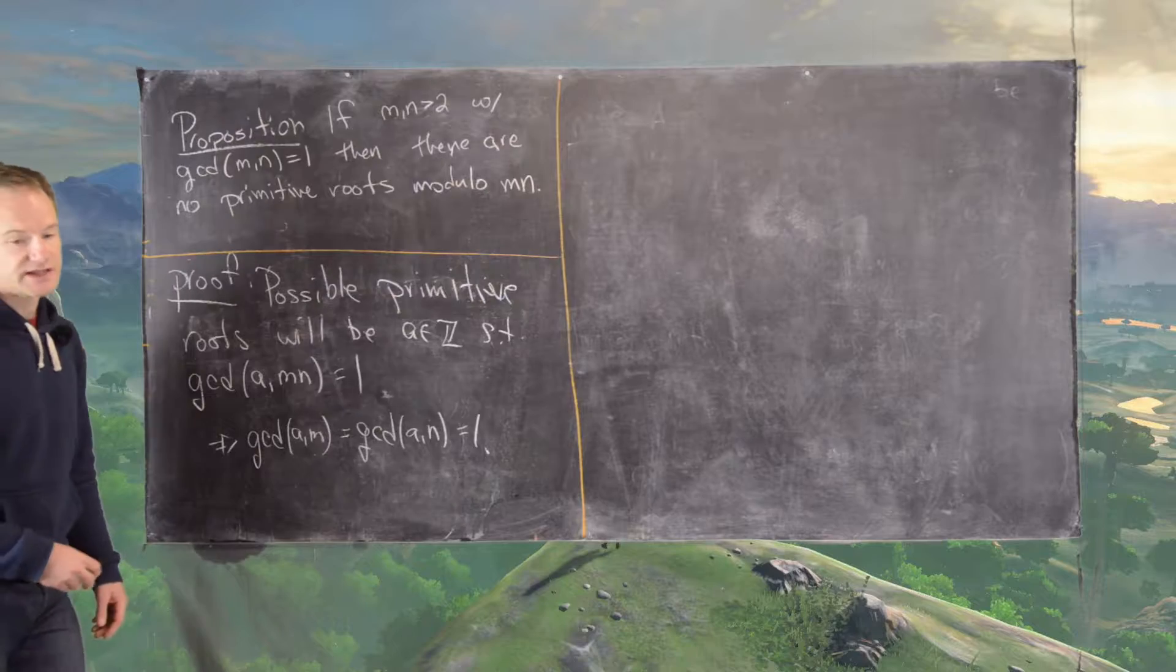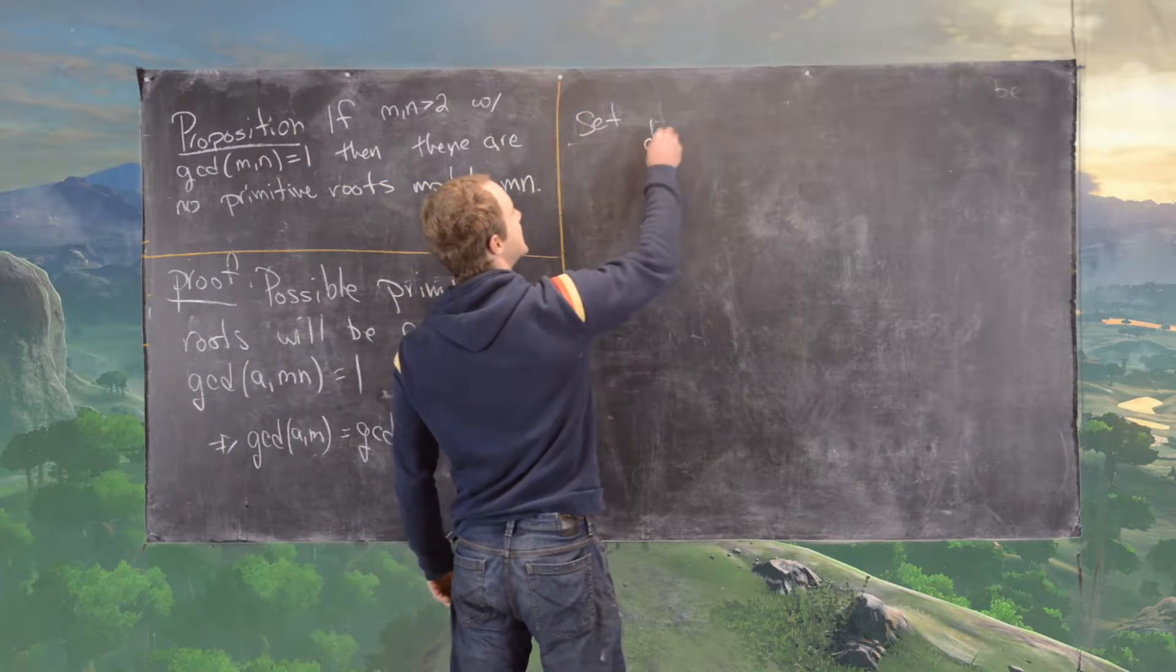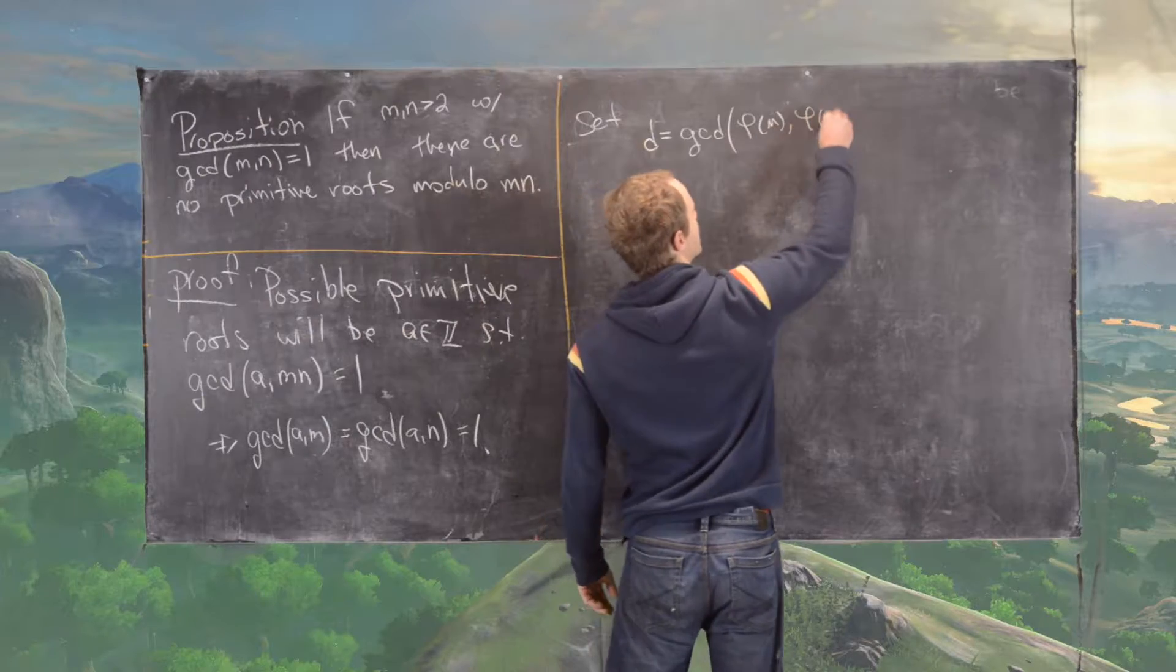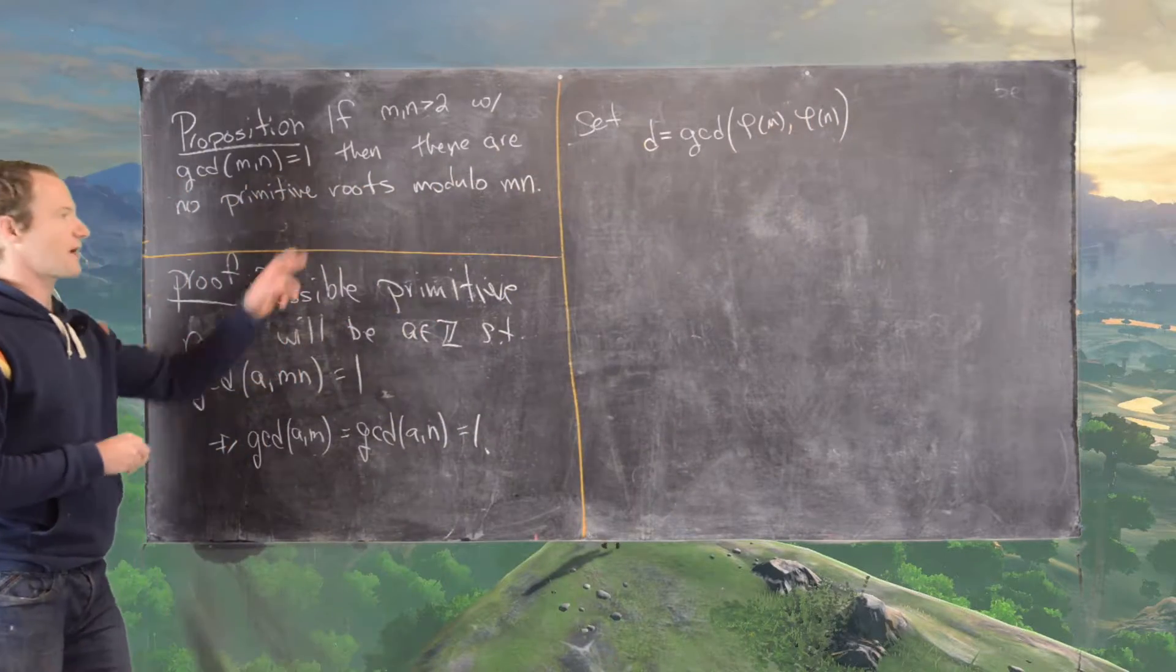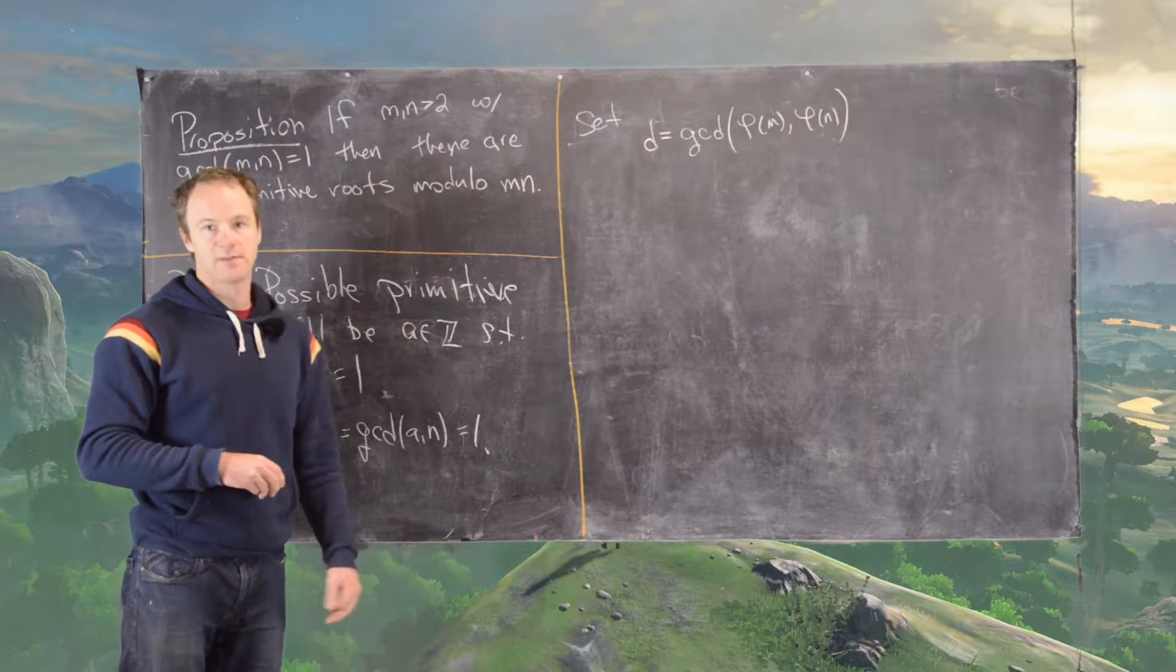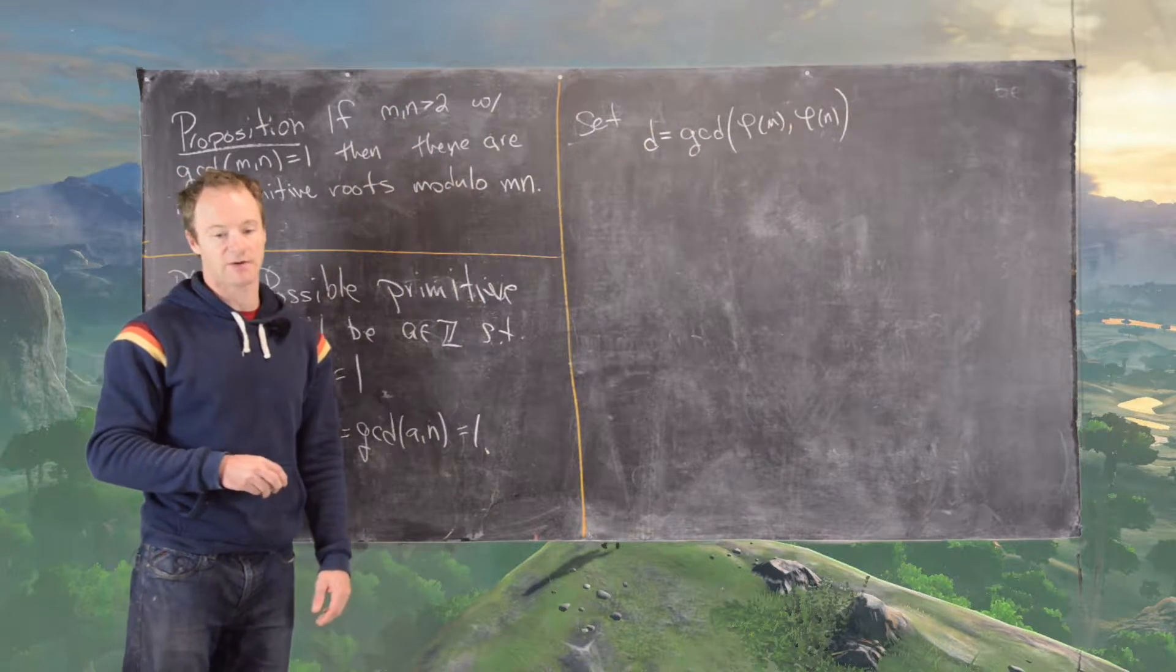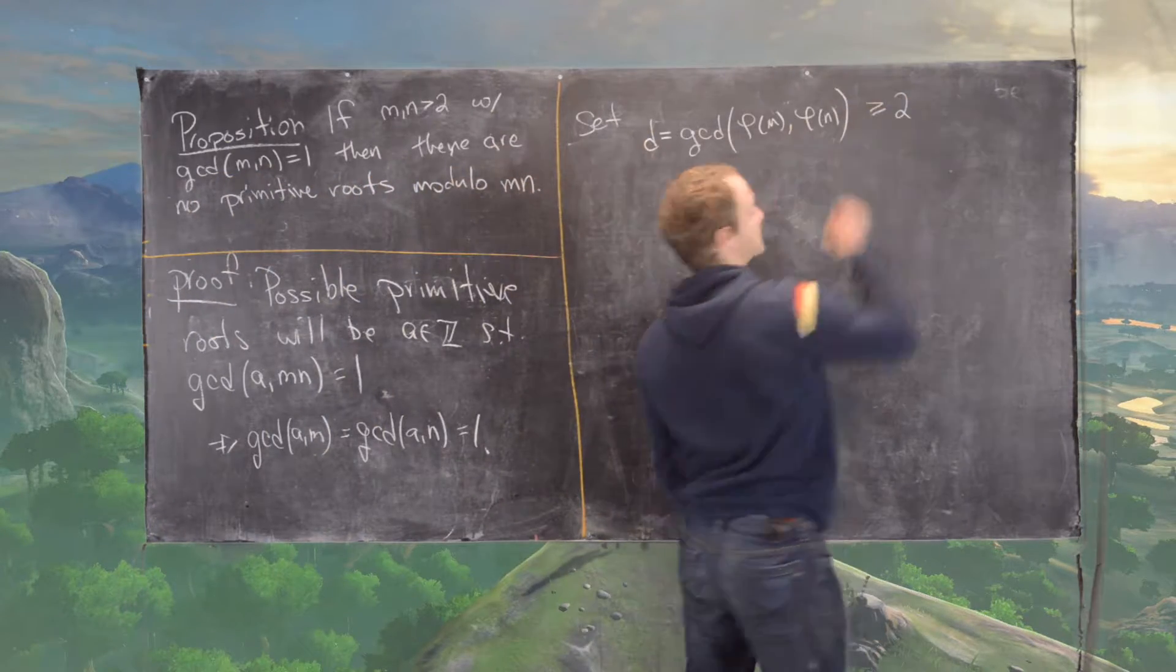The next thing that we want to do is the following. Let's set D equal to the GCD of phi of M and phi of N. Now notice that M and N are relatively prime, but phi of M and phi of N are not relatively prime. They're both even because M and N are both bigger than 2, so they at least share 2 as a common factor. And so let's notice that this thing is greater than or equal to 2.